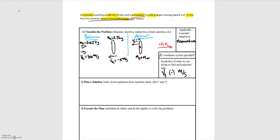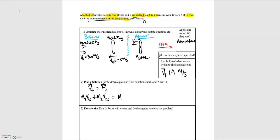For any collision, momentum is conserved, meaning momentum before equals momentum after. Remember, momentum is a vector so the sign matters. With two objects, we write: m₁v₁ + m₂v₂ = m₁v₁f + m₂v₂f. This is the conservation of momentum equation we'll use.